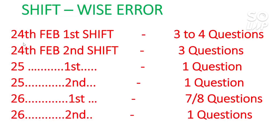Here is the shift-wise error summary. For 24th first shift, there are three to four questions with some error — either the answer key is wrong or the problem statement is wrong. For 24th second shift there are three questions. For 25th first shift, one question. For 25th second shift, one question. Most importantly, 26th first shift has seven to eight error questions, so if your exam was in that shift you should be very careful about claiming or getting bonus marks. 26th second shift has one error question.